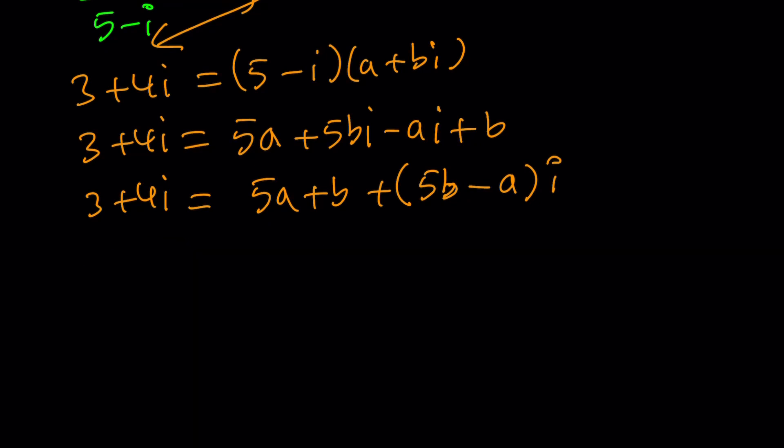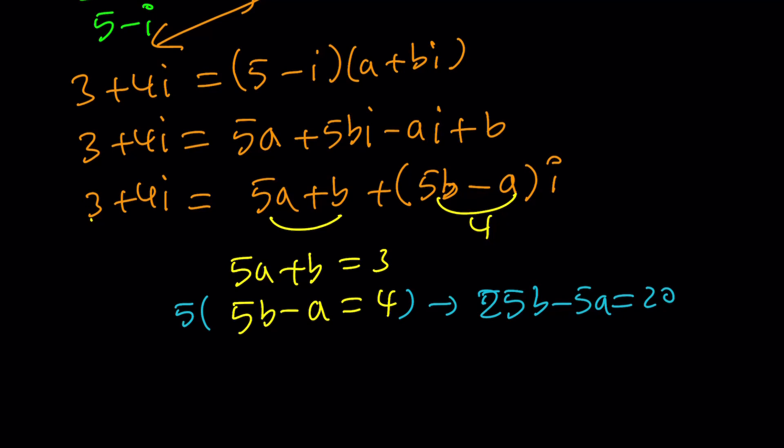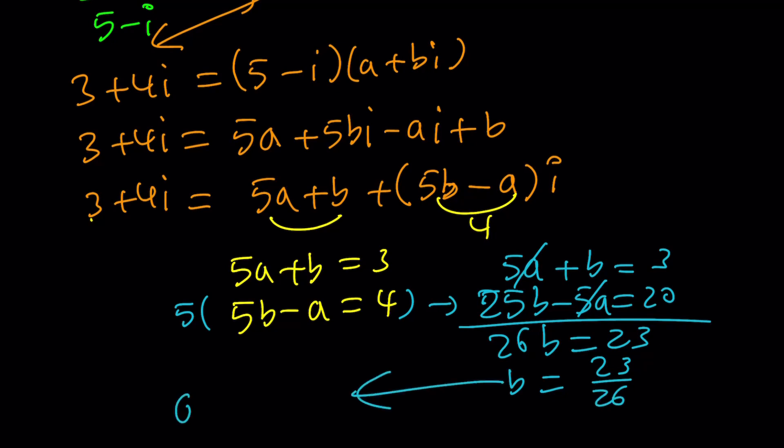Now we can go ahead and write the equations from here. First equation: this is going to equal 3, so 5a plus b is 3. And this is going to equal 4, so 5b minus a is 4. Obviously you want to solve for a and b. Let's go ahead and eliminate one of these variables. Let's multiply the second equation by 5. That gives us 25b minus 5a is equal to 20. And the first equation was 5a plus b is equal to 3. If you add these two up, you're going to get 26b is equal to 23, which means b is equal to 23 over 26.